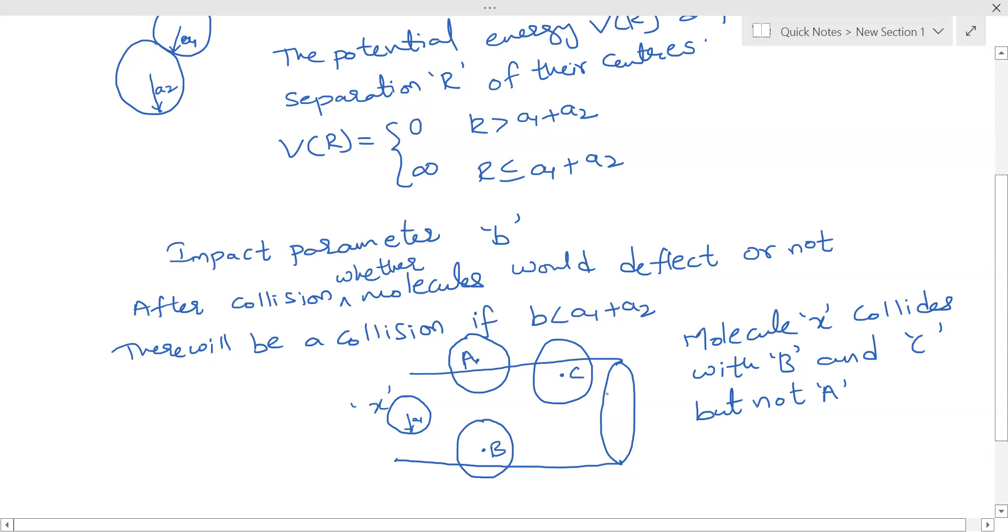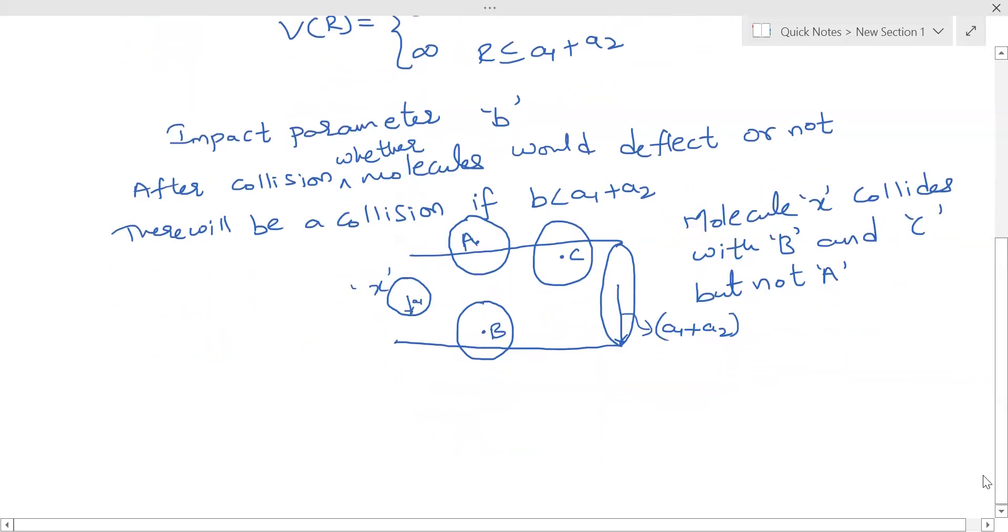Now the tube has a diameter. If you take from the center to here, this length will be A1 plus A2. Therefore cross section area of tube is equal to π(A1 + A2)². So this is the cross section of the collision.